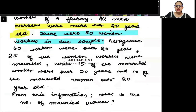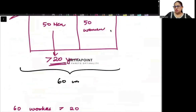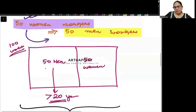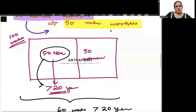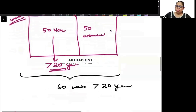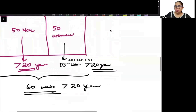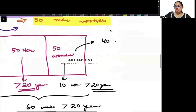All together 60 workers are over 20 years of age. So in total there are 60 workers who are above 20 years of age. But all 50 men are above 20. If all men workers are above 20 and in total 60 workers are above 20, this means that 10 women workers are above 20 years of age. That means 40 women workers are below 20 years of age.